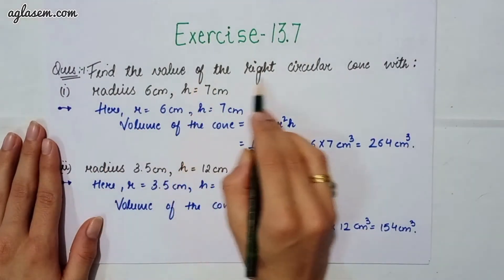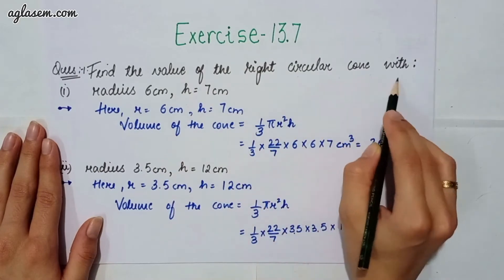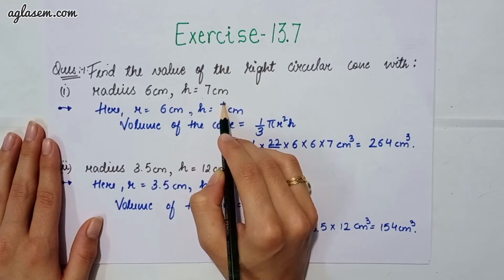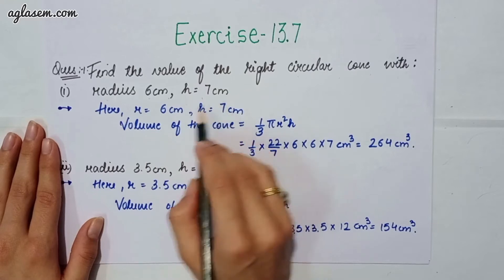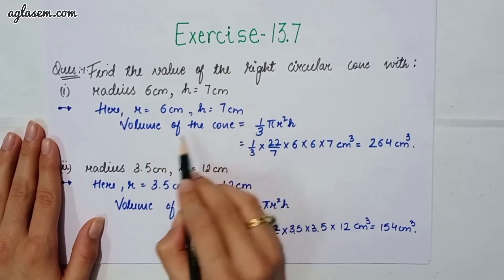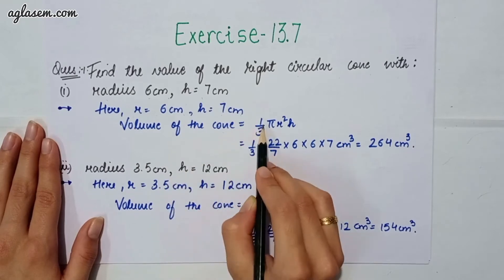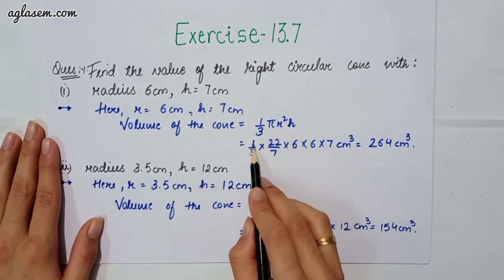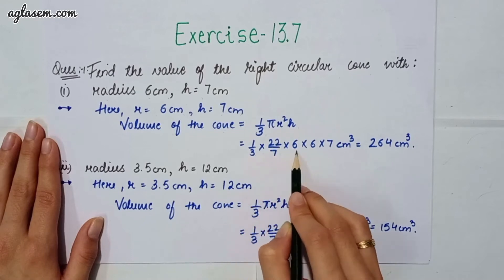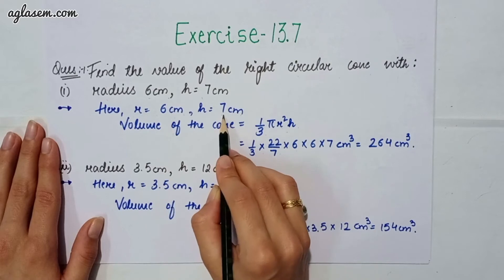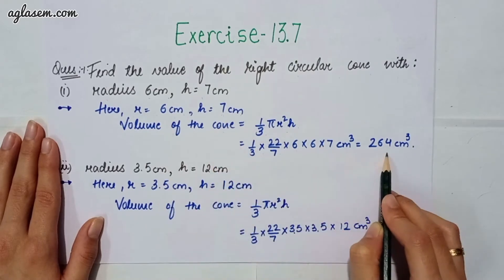So the answer is: radius is given to us and height is also given to us. The volume of cone we can find as 1/3 × π × r² × h. So 1/3 × 22/7, radius is 6 and height is 7. By solving this we will get 264 cm³.